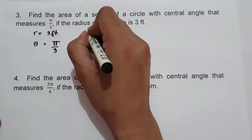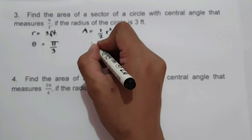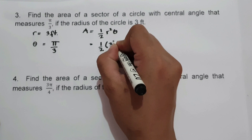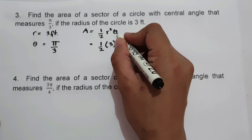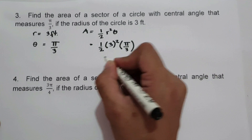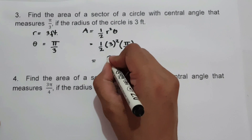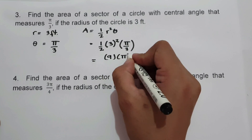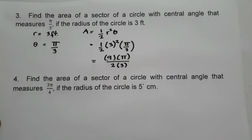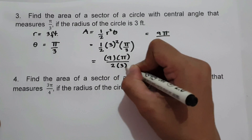We use the formula: area equals 1 half r squared theta. We have 1 half, then radius 3 feet, squared, times the central angle pi over 3. To simplify: 3 squared is 9, times pi over 2 times 3. That gives us 9 pi over 6. Since 9 and 6 are divisible by 3, 9 becomes 3 and 6 becomes 2, so we get 3 pi over 2.